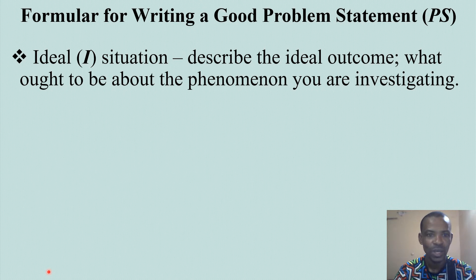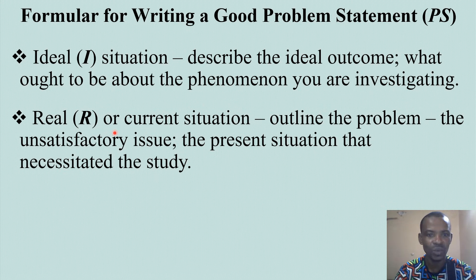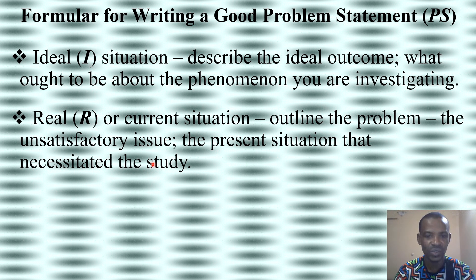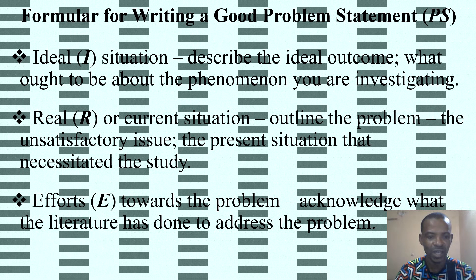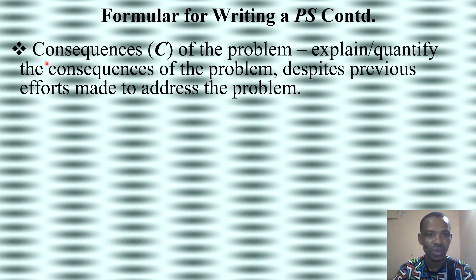After writing the ideal situation, you follow by writing the real situation — sometimes called the current situation, denoted with capital letter R — where you outline the problem you claim exists, which is the unsatisfactory situation. Then you discuss the efforts made in previous literature toward solving that problem, acknowledging what the existing literature has done to address it. So far we have three points: Ideal, Real, and Effort.